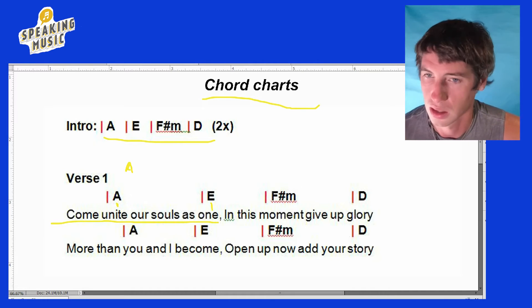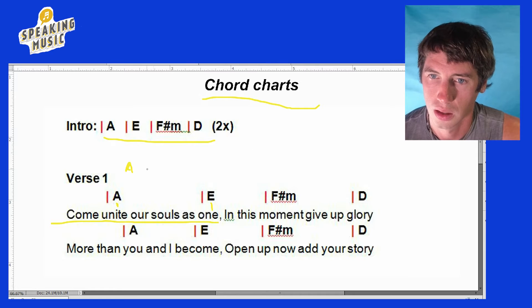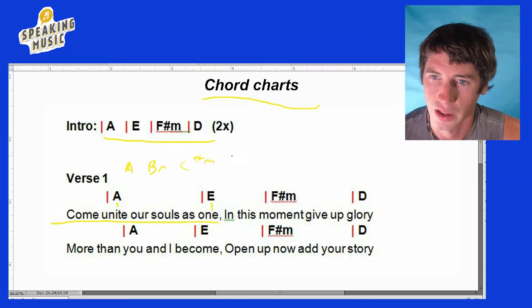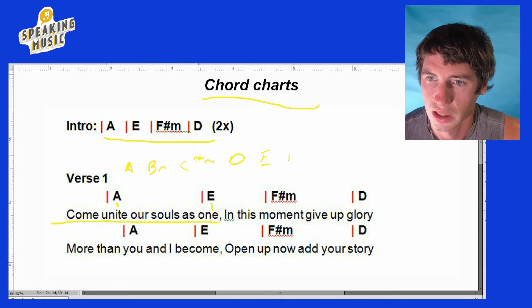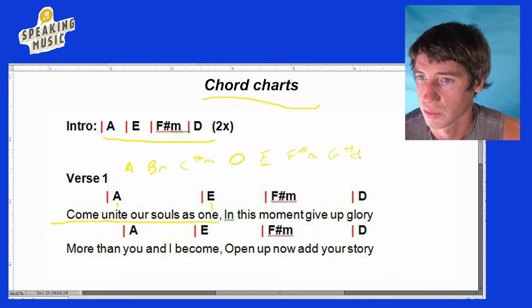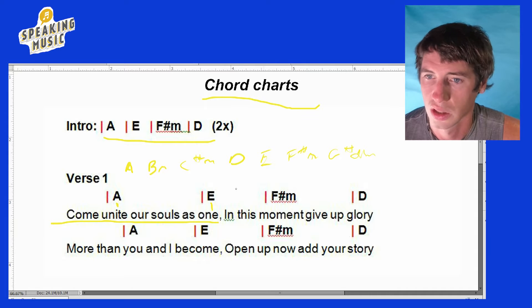The scale of A gives us: A, B minor, C sharp minor, D, E, F sharp minor, and G sharp diminished. And this fits in really well.